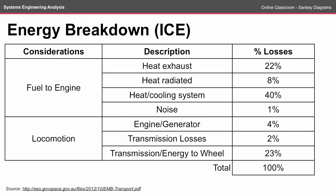A good place to start your Sankey diagram is understanding the energy breakdown in a system. For an internal combustion engine car, there are two main considerations: the fuel to the engine and then the engine generating the locomotion. The engine heating cooling system, as well as heat exhaust, contribute to a large percentage drop in efficiency, leaving only 23% going to the transmission or actual energy to the wheel.